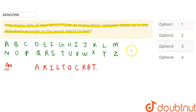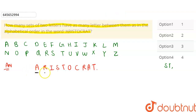So from here we already got one pair. If you do this randomly it will take a lot of time. So let's approach this systematically. First, let's take A. Between A and R, there are no letters here in the word, but in the alphabet there are quite a few letters between A and R, so this won't work.